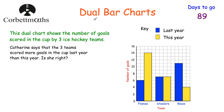Now let's have a look at dual bar charts, which are useful when comparing two different years or categories. Here's a dual bar chart for the number of goals scored in the cup by three ice hockey teams — the Flames, Steelers and Blazers — last year (in blue) and this year (in yellow). The Flames scored 6 last year and 14 this year. The Steelers scored 7 last year and 7 this year.